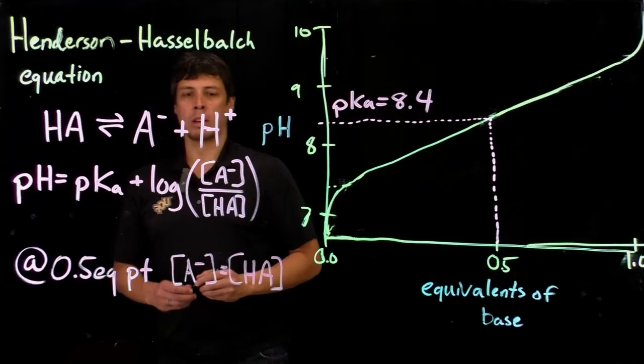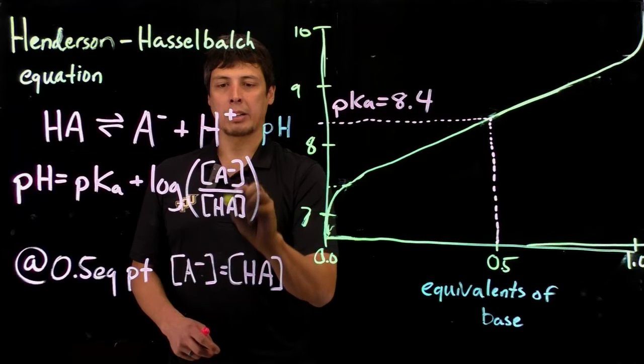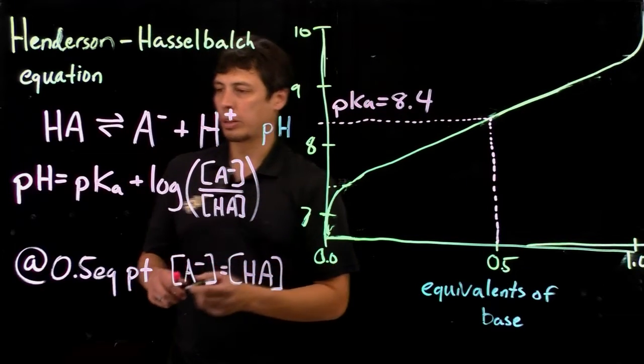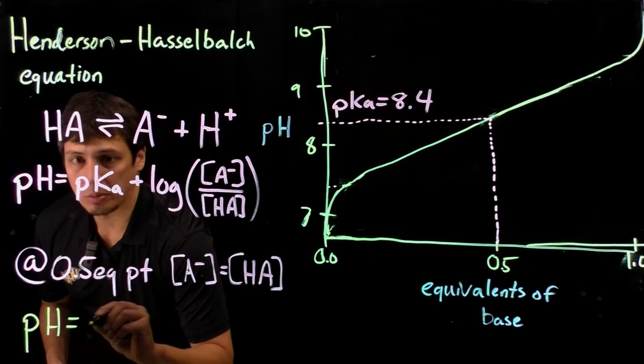If A minus is equal to HA, then we plug this in here. A minus over HA, if they're equal, is equal to 1, and we get pH equals pKa plus log of 1.